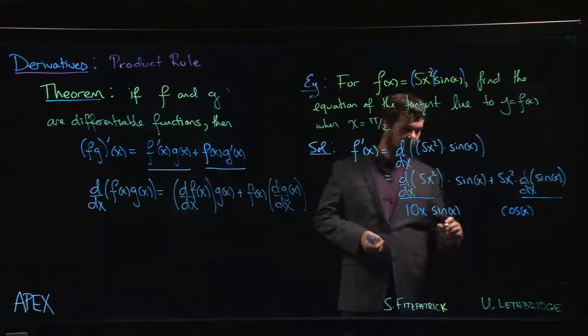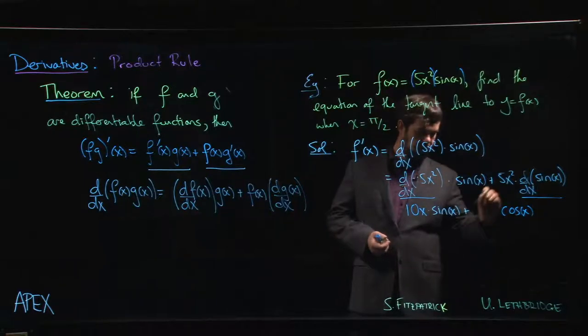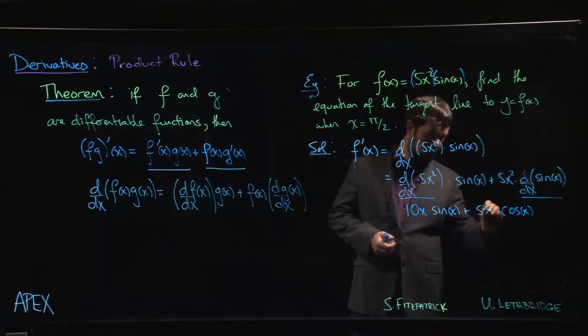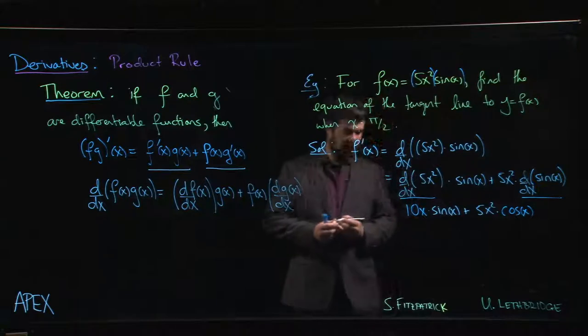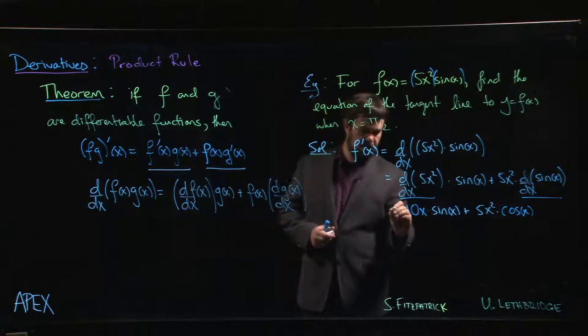and then we put in the remaining. All right, so we're still multiplying by sine x in the first term. We're still multiplying by 5x squared in the second term. And now we have our derivative.